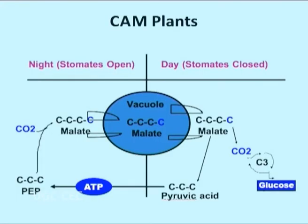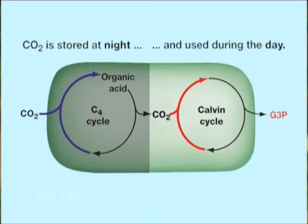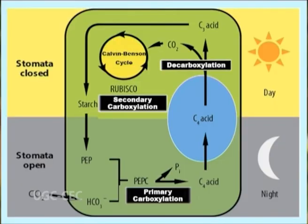Plants open stomata during the night and keep them closed during the day to conserve water. CAM plants open their stomata at night when the temperature is lower and close them during the day. Carbon dioxide is released from these compounds during the day and enters the Calvin cycle. During the day, the light-dependent reactions proceed making more ATP and NADPH, which promotes the release of carbon dioxide from the organic acids, and rubisco operates as normal but in a greatly carbon dioxide-enriched environment.